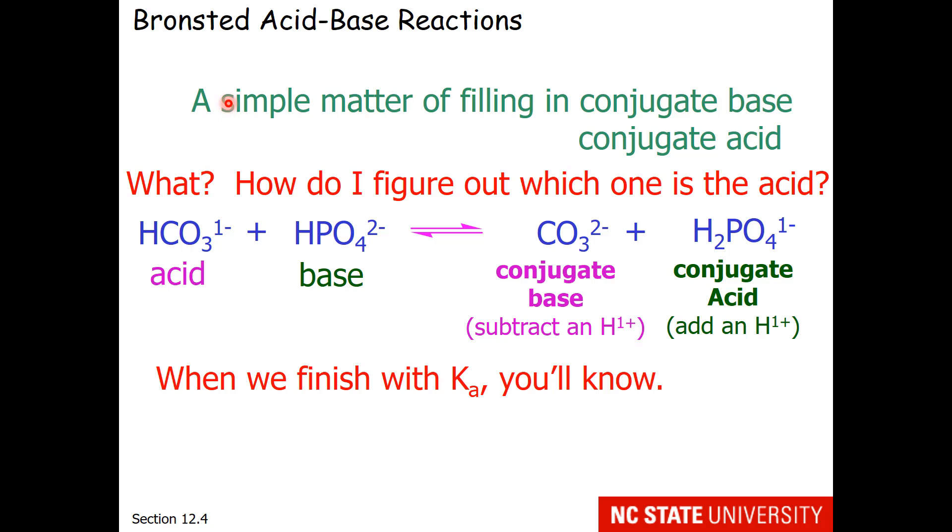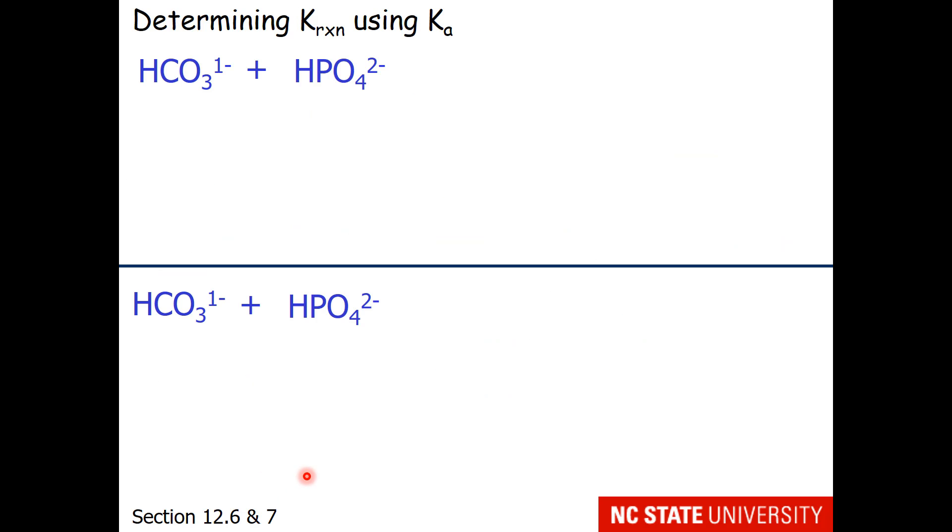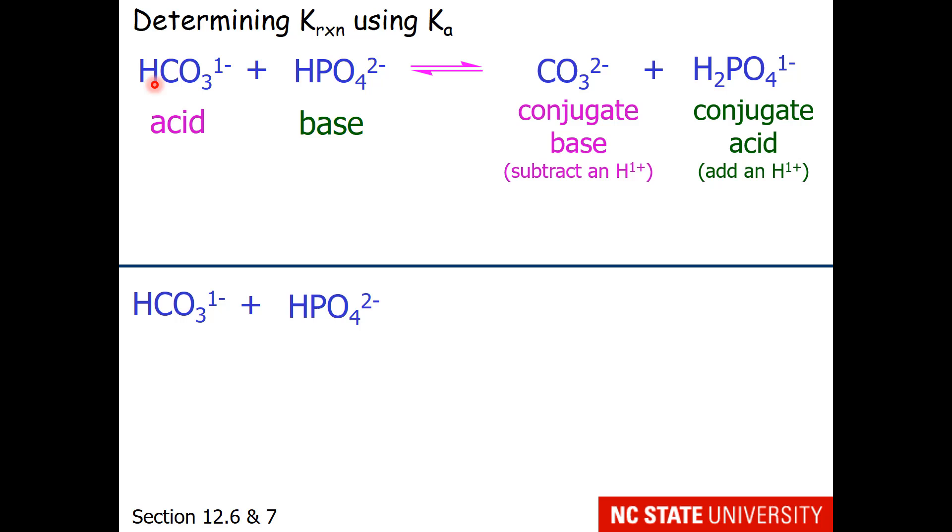Here is another question I posed to you in an earlier lecture. What if I gave you amphiprotic species? How would you know which one reacts as the acid and which one reacts as the base? Because these could be reversed. And I told you when we finish with Ka, you will know. Here is how we work this. For the top one, let's pretend that hydrogen carbonate is my acid and hydrogen phosphate is my base. So the acid loses a proton to become carbonate and the base gains a proton to become dihydrogen phosphate.